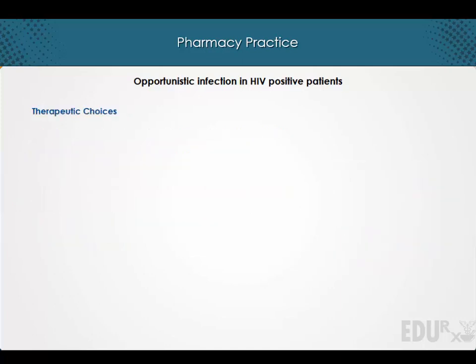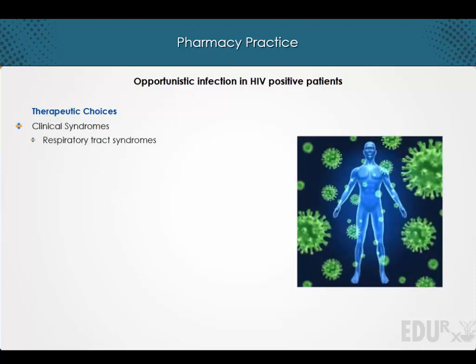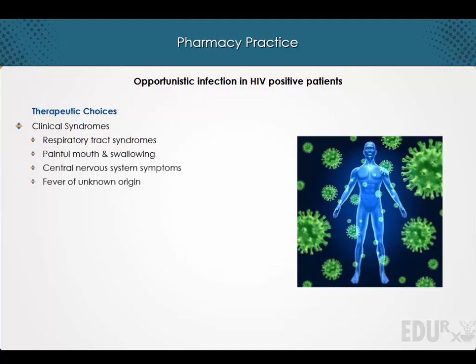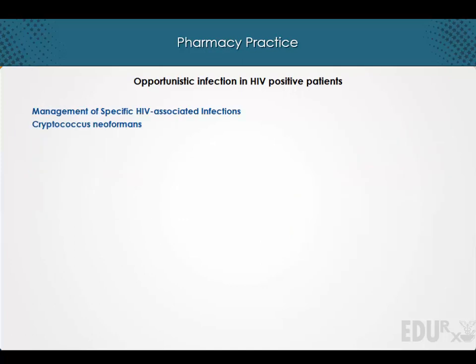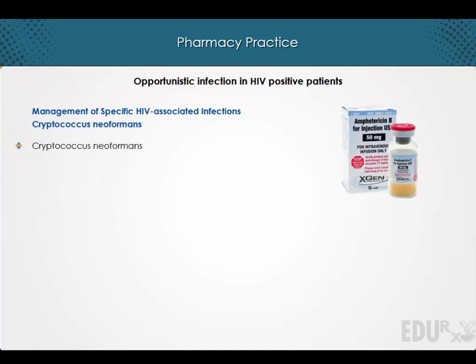Under therapeutic choices, we shall discuss various clinical syndromes such as respiratory tract syndromes, painful mouth and swallowing, central nervous system symptoms, fever of unknown origin, diarrhea, and immune reconstitution inflammatory syndromes.